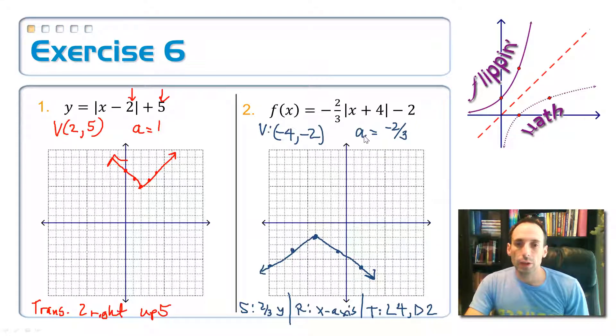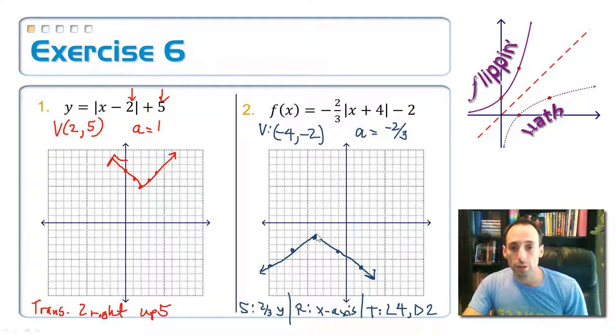And the a value, what I'm scaling it by, is negative 2 thirds. So I'm going to use that like a slope for the right side of the graph. I would go down 2 and right 3, down 2, right 3. In order to make the V shape, I also go down 2 and left 3, down 2, left 3, in order to make it symmetric, and then I make my V shape.